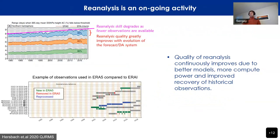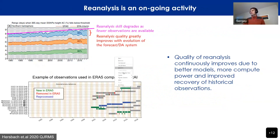Reanalysis is not one and done. Quality continually improves due to better models, more compute power, and improved reconstruction of historic observations. From Hans Herbach's paper on ERA5, as you go back in time the quality decreases because there are fewer observations. But if you look at the improvement between generations of reanalysis, this improvement is really staggering — comparable to several decades of improvement in observations.